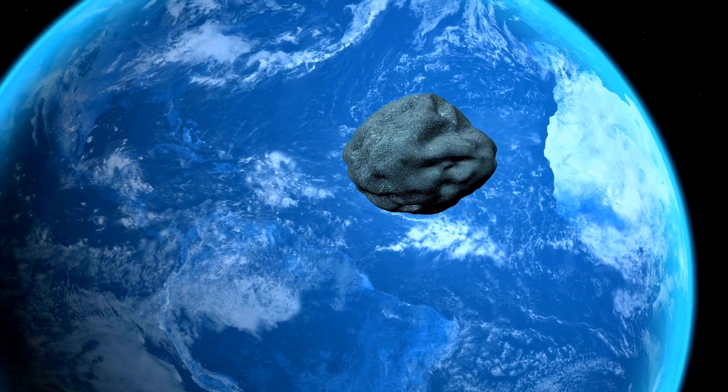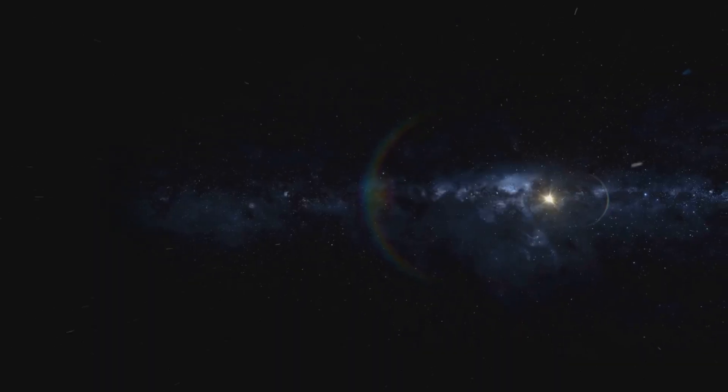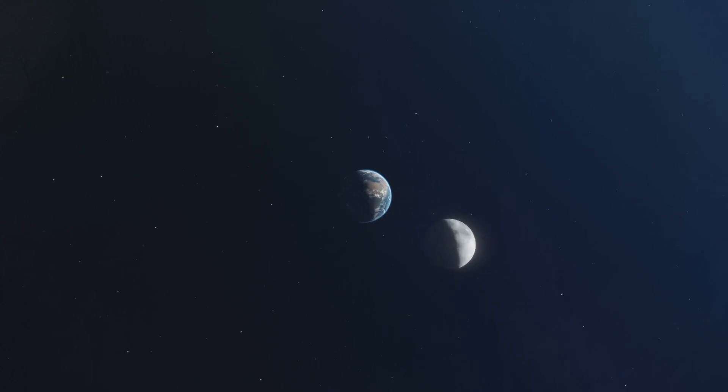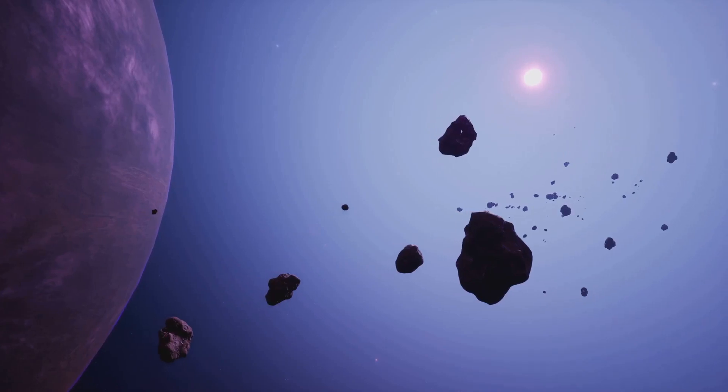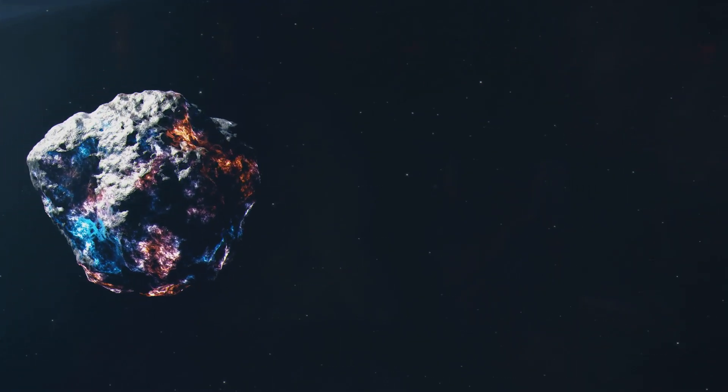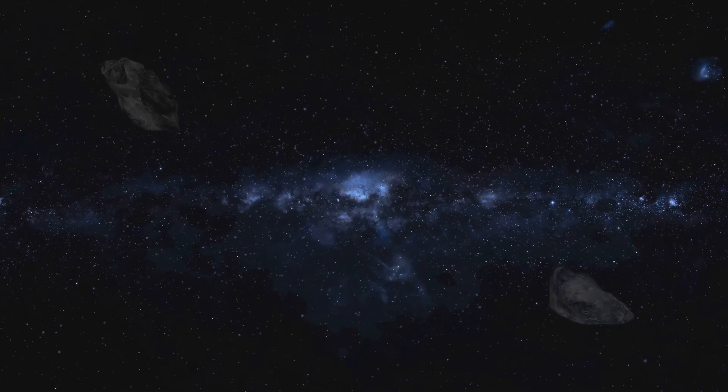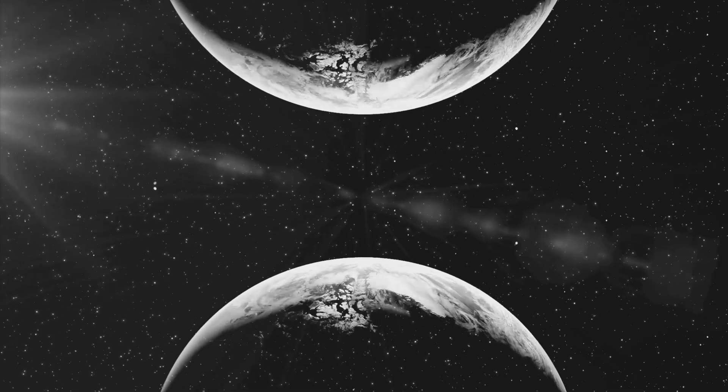2024 PT5 is minuscule compared to our permanent Moon. It is estimated to be only about 20 feet wide. Our Moon, in contrast, is over 2,000 miles in diameter. This size difference highlights the vastness of space and shows the range of objects that orbit our Sun. The small size of 2024 PT5 also explains why it is called a mini-moon. These temporarily captured objects are much smaller than our Moon and are often referred to as temporary satellites.